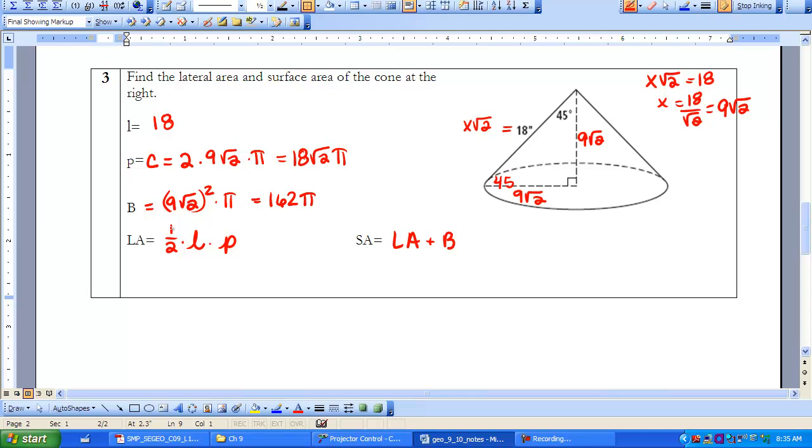I'm going to leave this pi attached. I'm going to leave everything in radical form and the pi attached until the very end. Then I'll do a rounded answer as well as an exact answer. So now I have enough to plug into my formula. I know one-half times my slant height, which is 18. And my perimeter is 18 root 2 times pi. Now when I simplify that, I get one-half times 18 times 18, which gives me 162 times pi root 2. That's my lateral area.